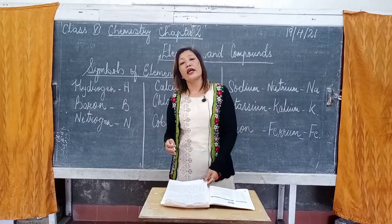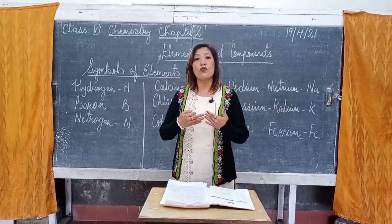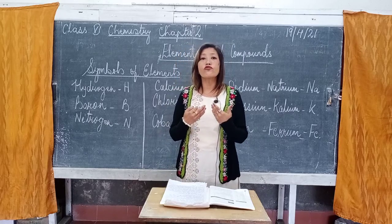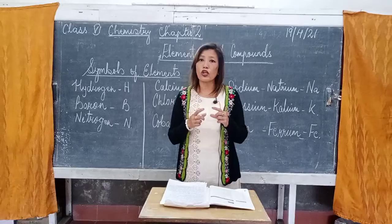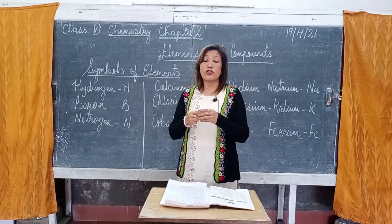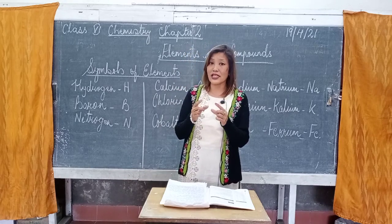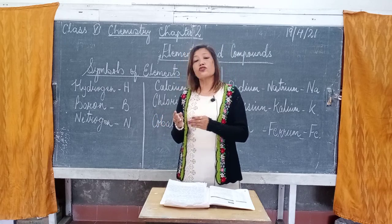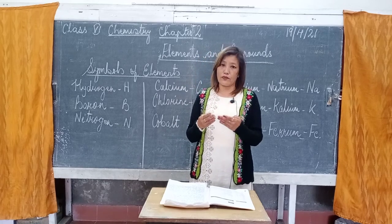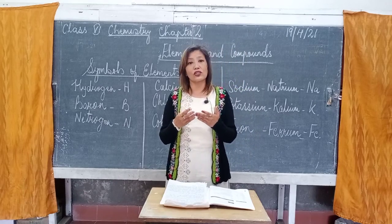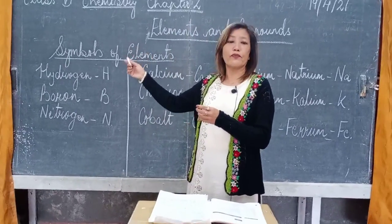To understand the word symbol, consider that we all have our names. When we write our names we write our full names, but sometimes we have to write our names in short form, which we call our signature. Just by looking at the signature, other people will know that it belongs to a particular person. So the signature represents that person — in the same way, symbols represent elements.